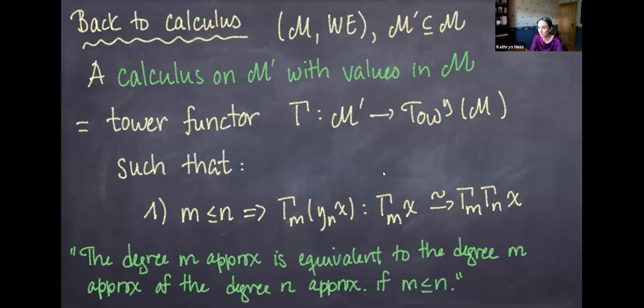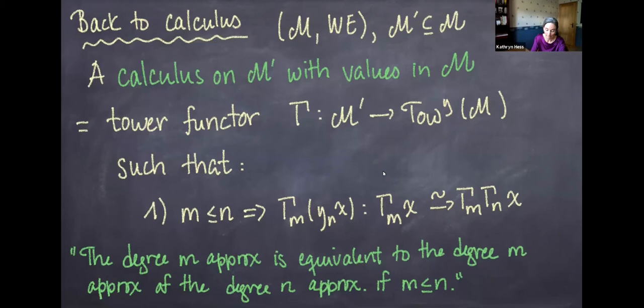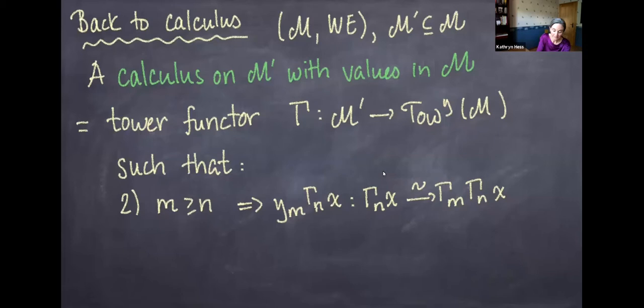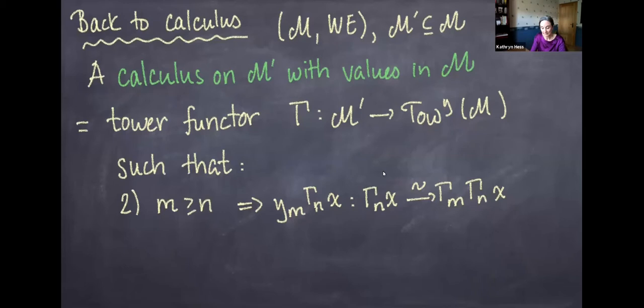If M ≥ N, then gamma_M applied to gamma_N(X) should also be a weak equivalence. If I already have a polynomial of degree at most N and I take a degree-M approximation where M ≥ N, it shouldn't change anything. The degree-N approximation is equivalent to its own degree-M approximation when M ≥ N — something that seems quite reasonable.